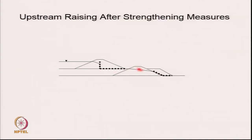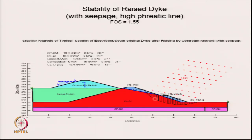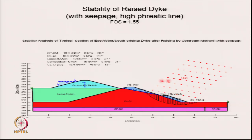If you are able to make this berm, then you can also do the upstream raising. After making the berm with factor of safety of 1.6, doing the upstream raising with the phreatic line being caught by the chimney drain, the factor of safety is still more than 1.55. So you can do the upstream raising after remedial action on the original dike.